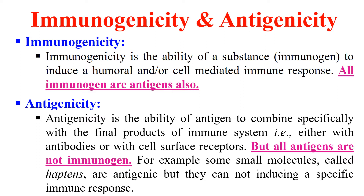All antigens are not immunogenic. Why? Because if an antigen activates the immune system, that antigen can also be called an immunogen. So all antigens cannot be immunogens, but all immunogens are antigens — because immunogenicity is the power to activate the immune system, whereas antigenicity is only the ability to interact with immune cells without activating the immune system.